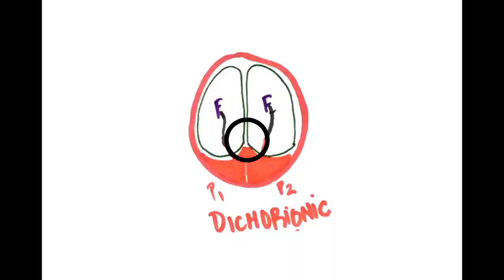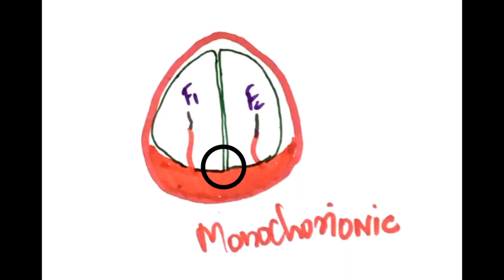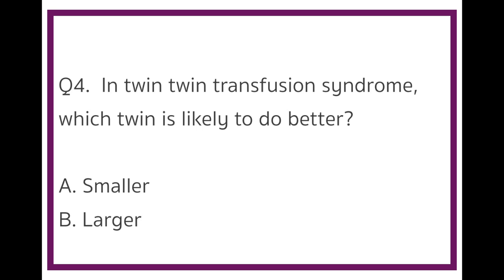In monochorionic pregnancies, this part isn't too deep, which makes it look like the alphabet T. This is the T sign. Hence, twin-twin transfusion syndrome is more likely to be seen in pregnancies characterized by a T sign on ultrasound.